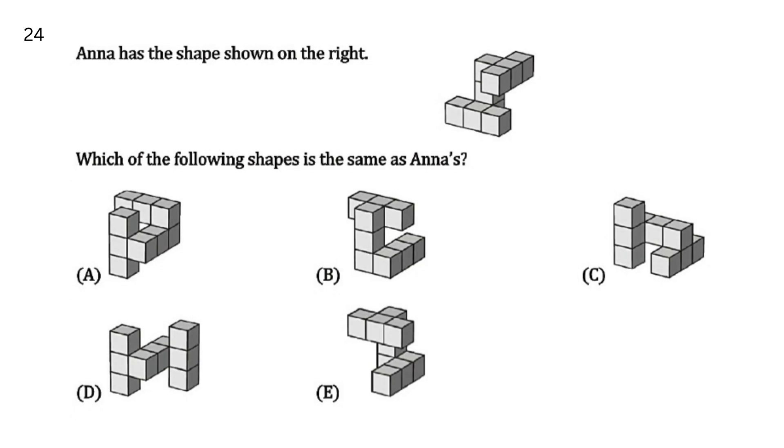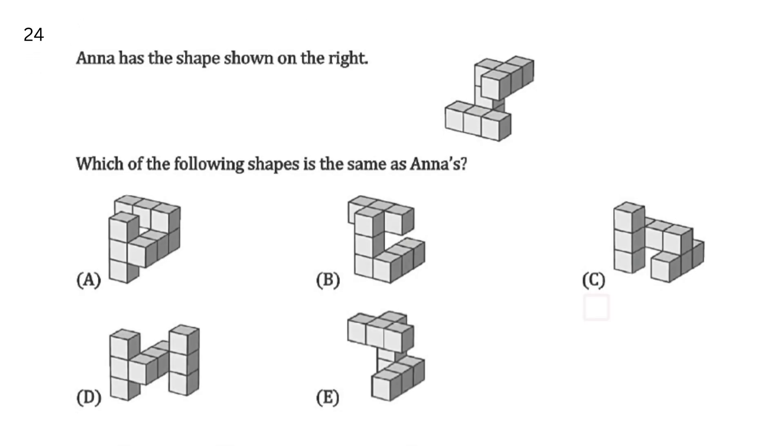Ana has the shape shown on the right. Which of the following shapes is the same as Ana's? When we look at this shape, then our upper and lower blocks are connected to the second block. Which is such a figure which is connected to the middle block? Our options hain A, B, C, D, and E. Our answer is C.